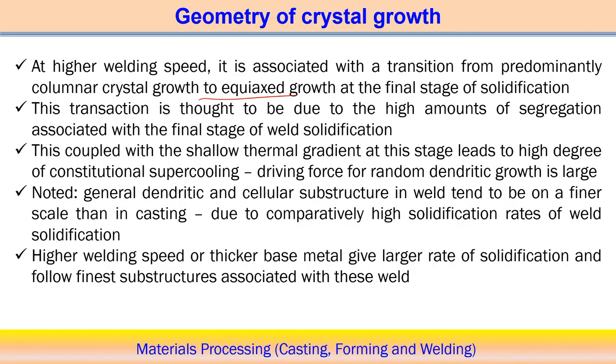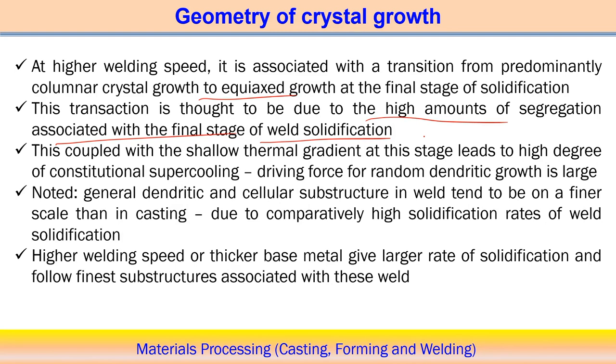At the center point, solidification occurs at the end stage. At the end stage, within a very small time, total heat will be extracted. When total heat is extracted in a very small time, so many nucleations will start forming at the same time at different positions. That will try to create an equiaxed structure at the final stage of solidification, which is why it is associated with the center point — where the growth rate is maximum. Additionally, high amounts of segregation may be associated with the final stage of weld solidification at the center point, because segregation is basically variation of composition.